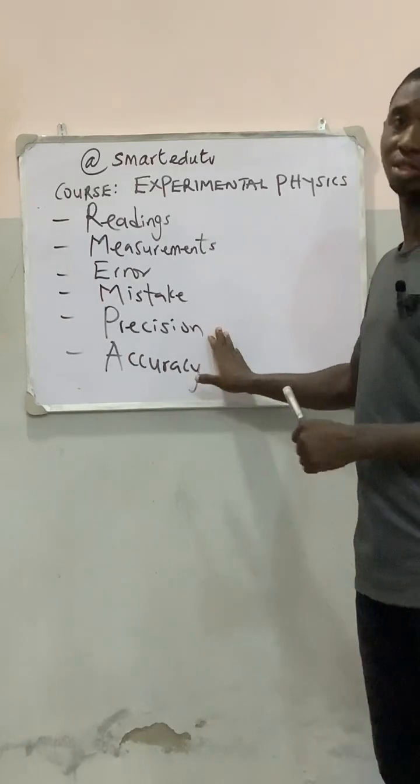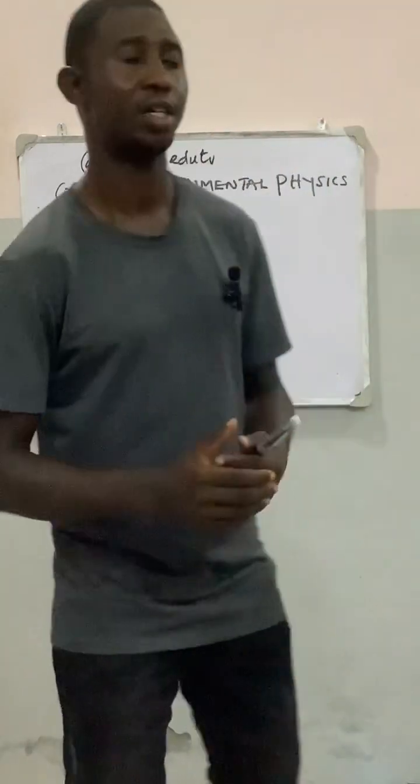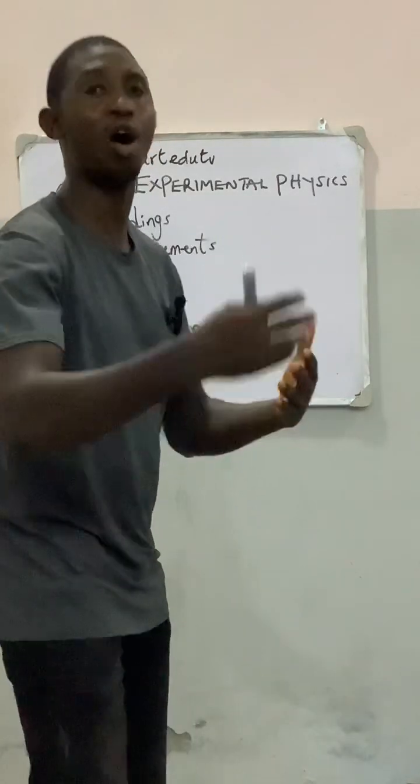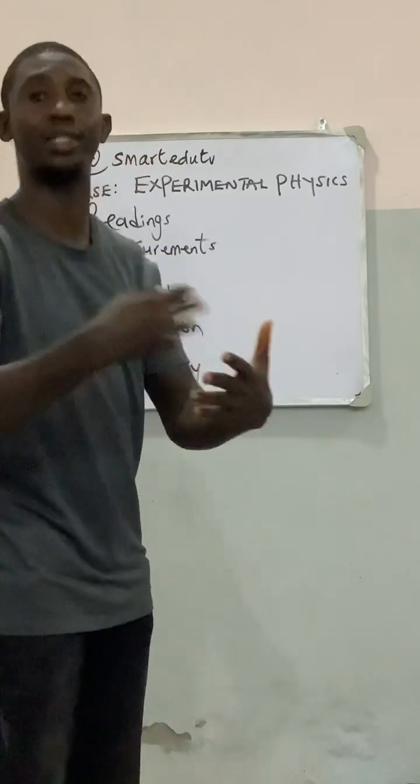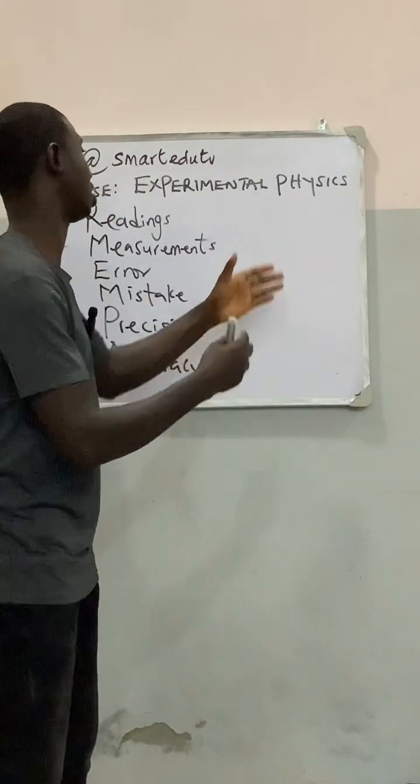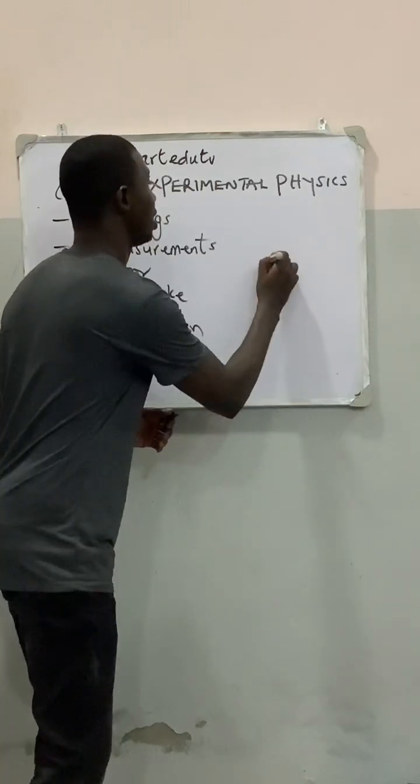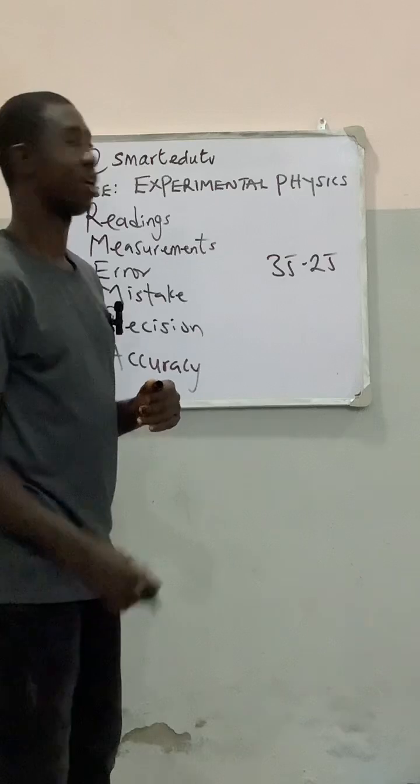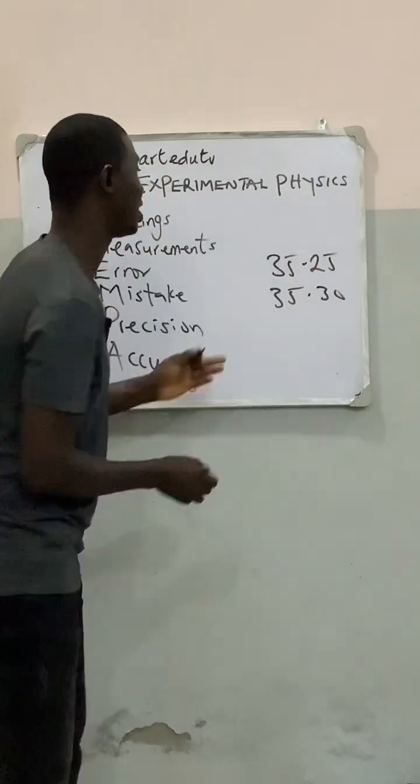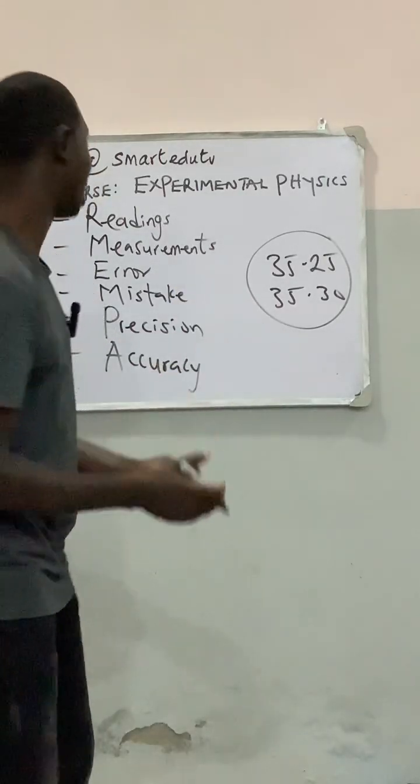The next one, we look at precision. What do we mean by precision? Precision simply means the closeness of measured values, how they are closely related to one another. When we perform an experiment and the first result gives, let's say, 35.25, while the second reading gives 35.30, we can see that these are precise readings. Why? They are closely related. So that's what we mean by precision.